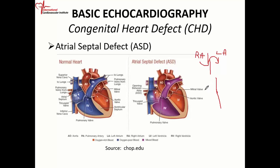The PFO can open if the pressure on the right side is elevated for whatever reason. When we talk about atrial septal defects, it's a defect in the atrial septum — it's different from a PFO, but we usually lump PFO in that category. There are different types of atrial septal defect, and you need to pay special attention to that, especially if you're doing TEE — you have to know what type of defect you're looking for.